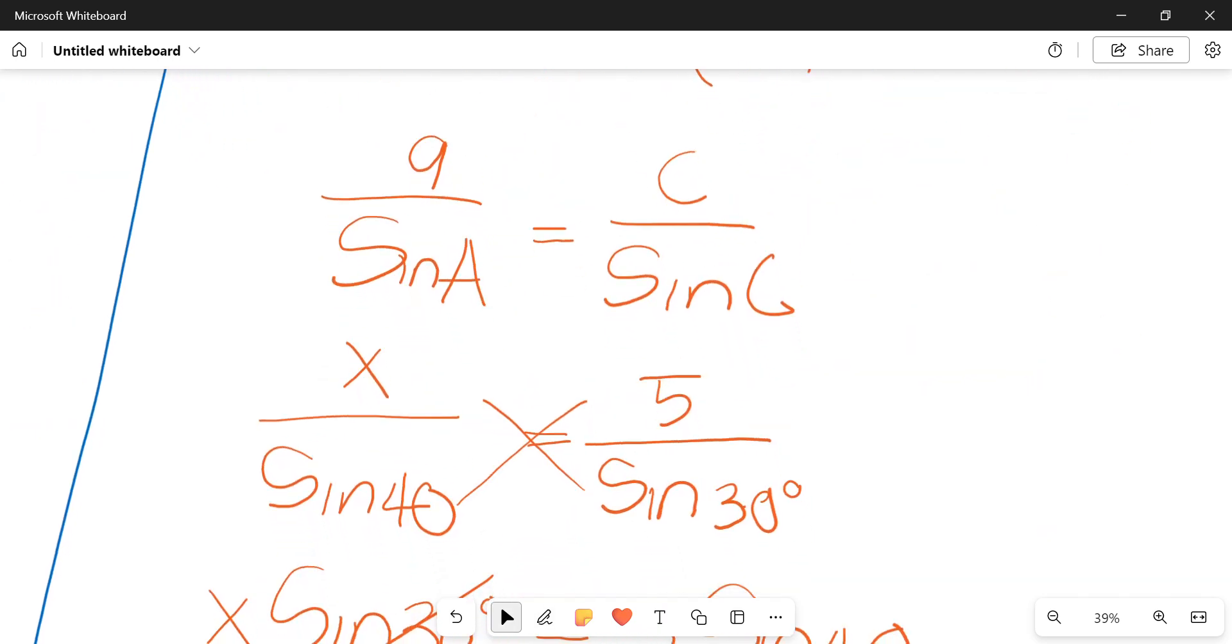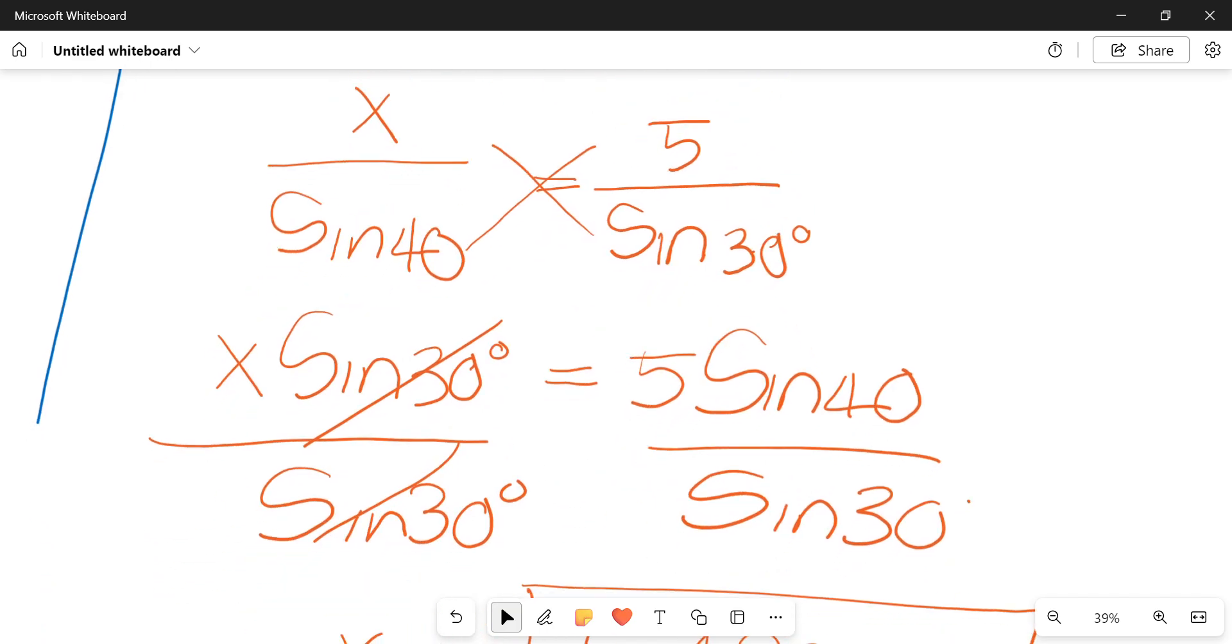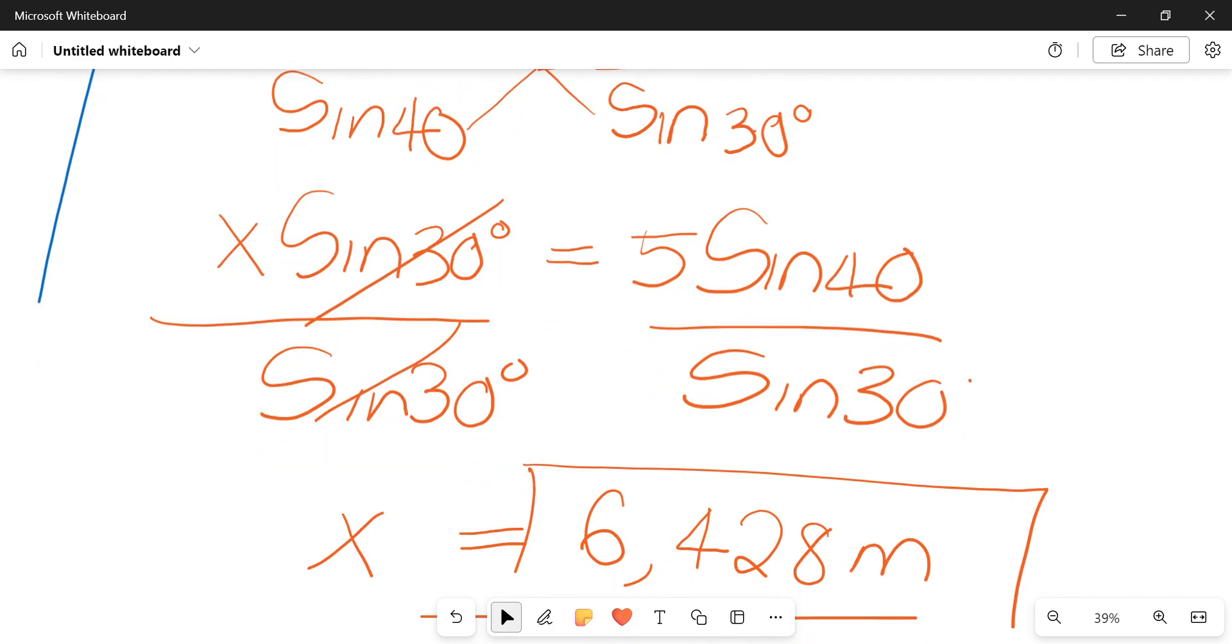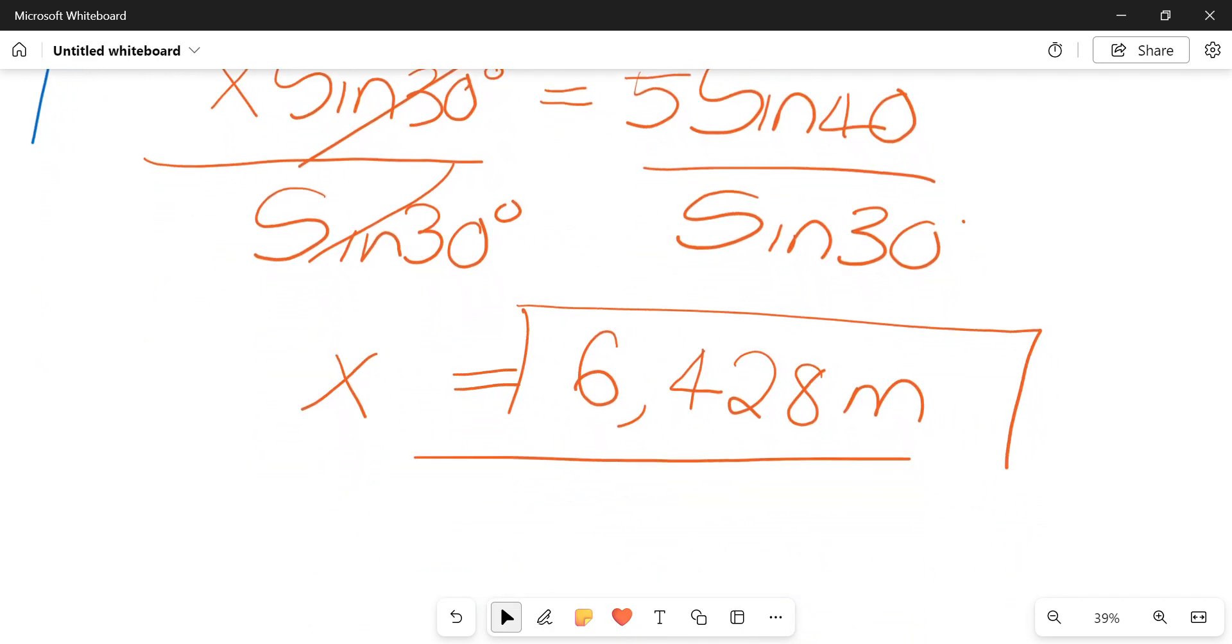So our A, again, is the X variable we're trying to solve over sine A, which is sine 40. Then our C, the length was five. Then the included angle was 30 degrees. Then you cross multiply. It led us to an X sine 30 is equals to five sine 40. Then we divided both sides by sine of 30. And essentially, it gave us a value of X is equals to 6.428.